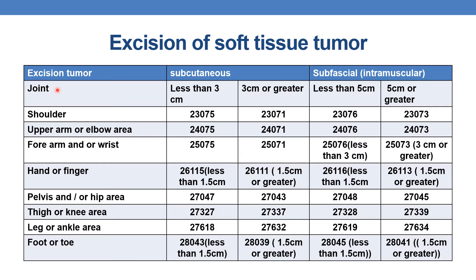Coming to shoulder area for excision of soft tissue tumor. For subcutaneous tumors: if less than 3 centimeters, CPT is 23075; if 3 centimeters or greater, CPT is 23071. For intramuscular or subfascial tumors of the shoulder, subcategorized by diameter: if less than 5 centimeters, CPT is 23076; if 5 centimeters or greater, it is 23073.